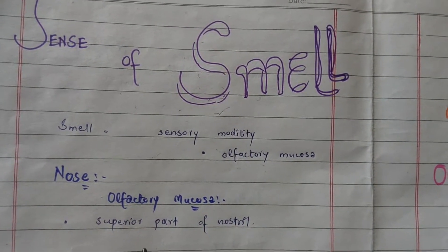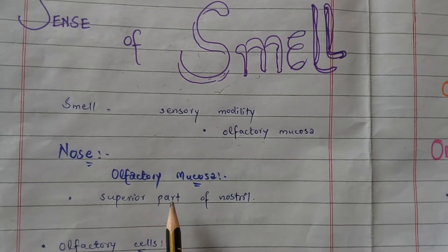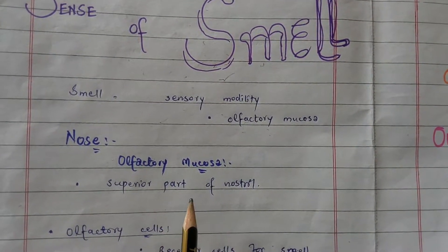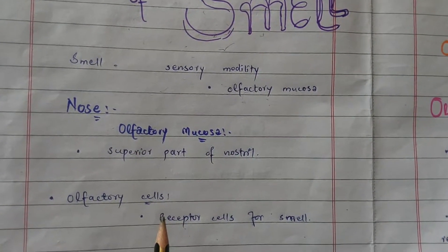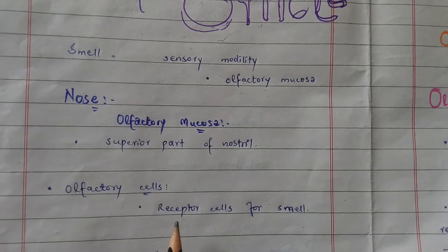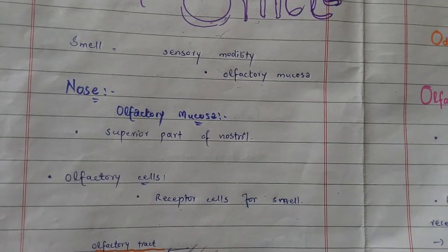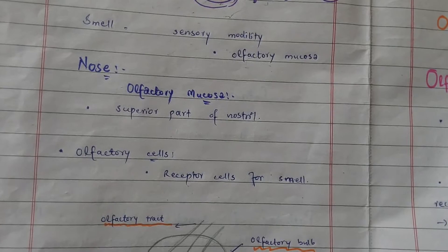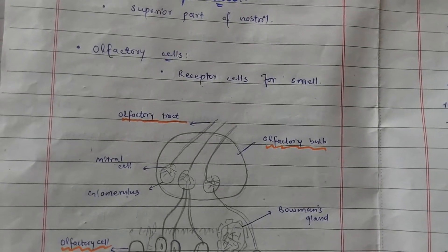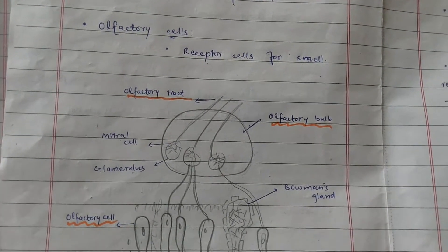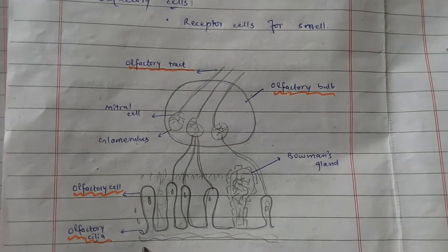The nose is the organ for the sense of smell. In the superior part of the nasal cavity there is a membrane called the olfactory mucosa or olfactory membrane. In the olfactory membrane there are olfactory cells, which are the receptor cells for the sensation of smell. These are bipolar cells derived from the central nervous system. From their mucosal ends, 4 to 25 olfactory hairs project into the mucus that coats the inner surface of the nasal cavity — these are the olfactory cilia.